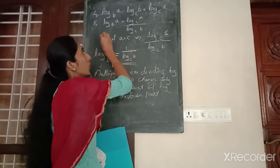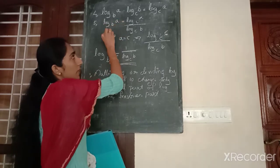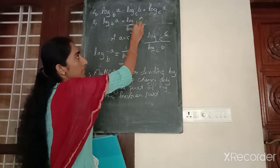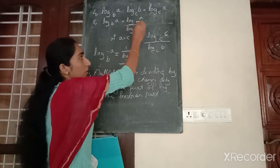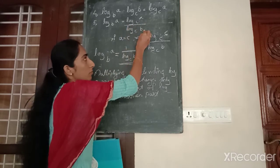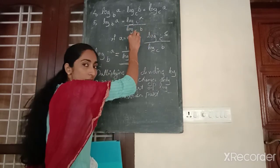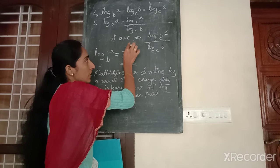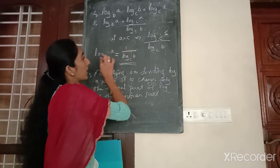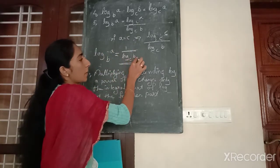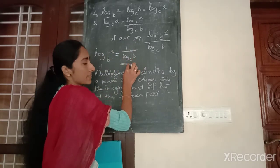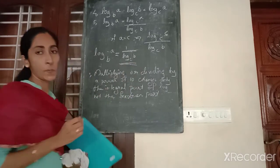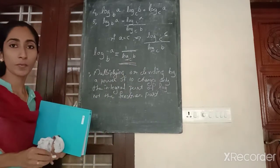The fifth law: logarithm of A base B is equal to logarithm of A base C divided by logarithm of B base C. And if we consider A equal to C, then the value is 1 by log B base C.